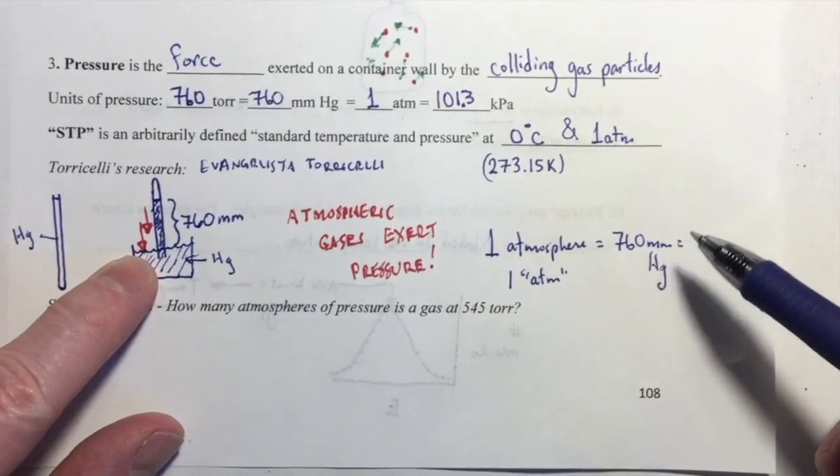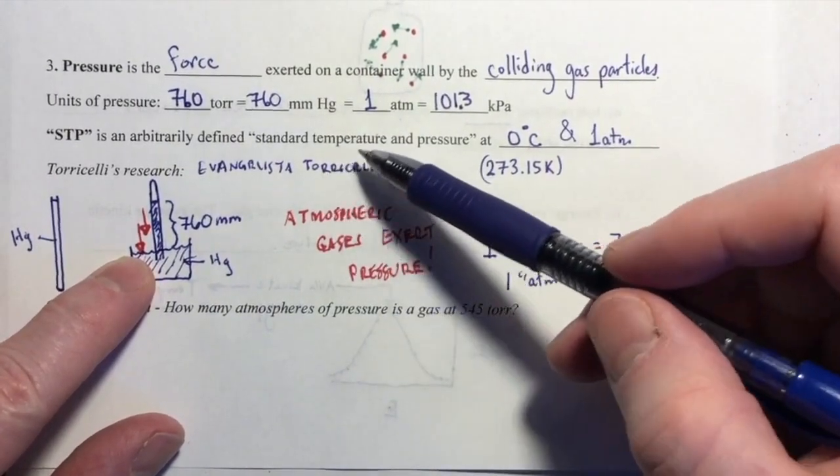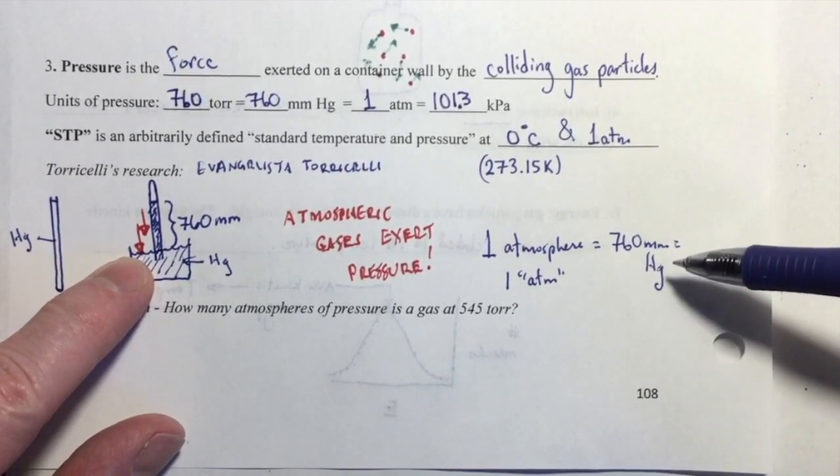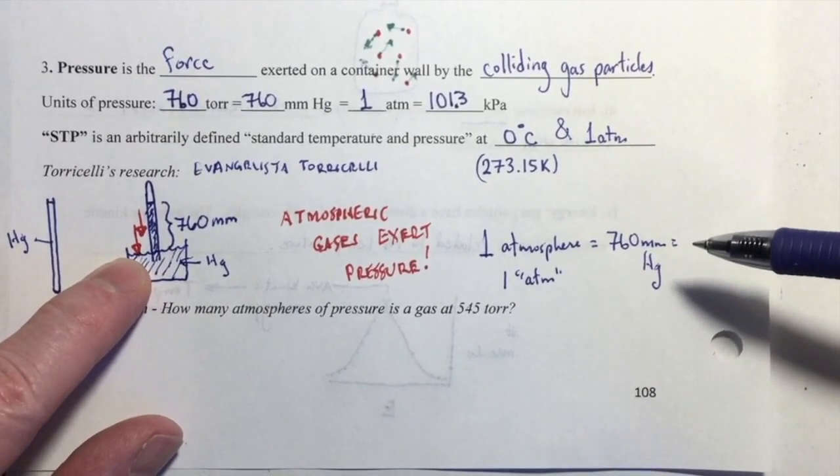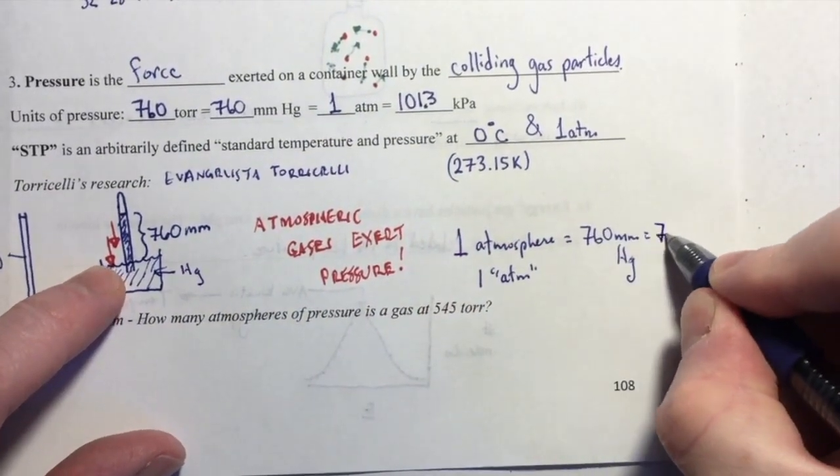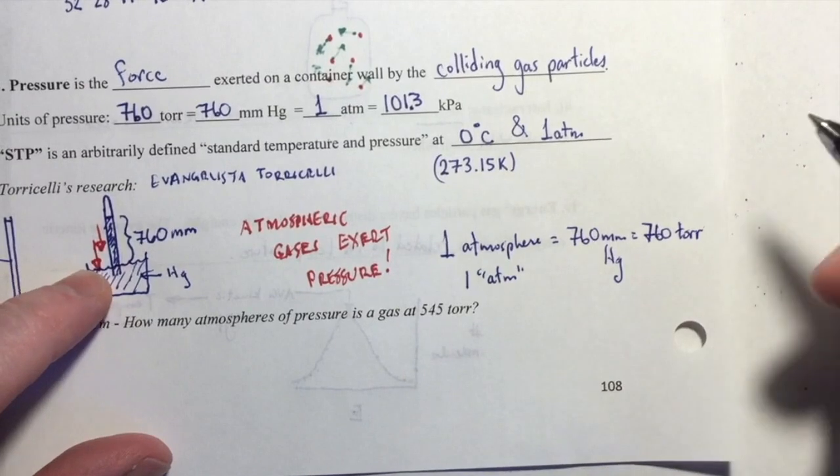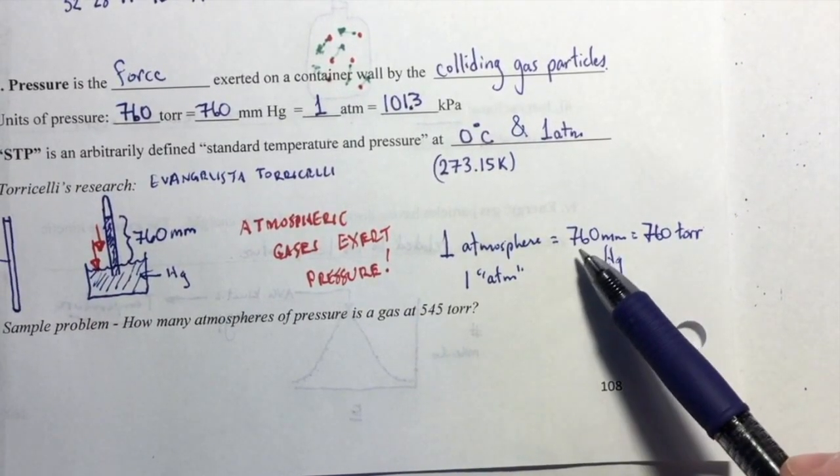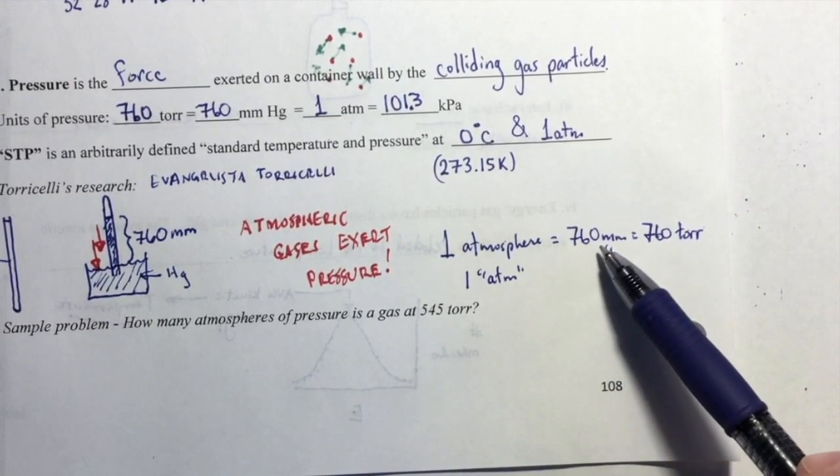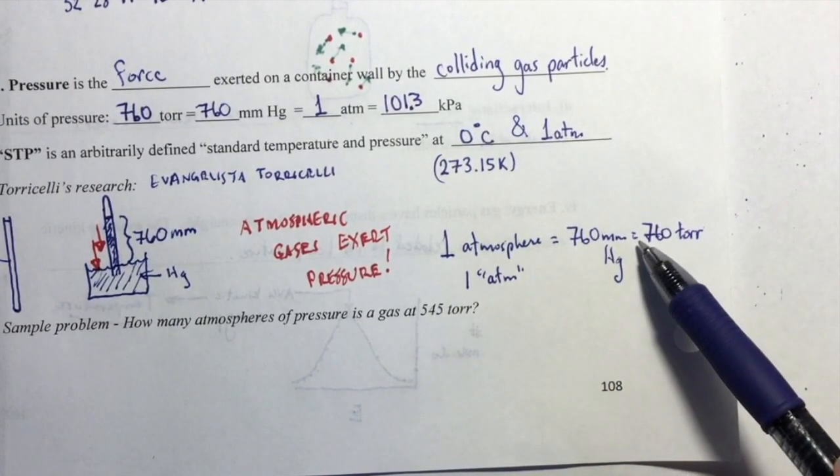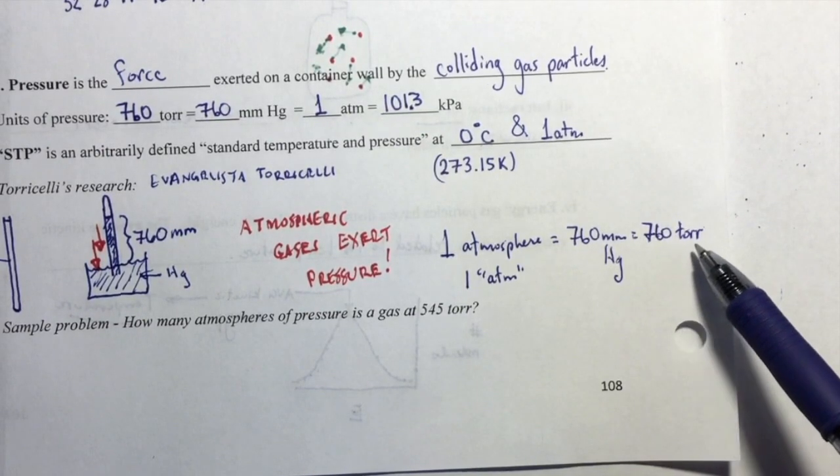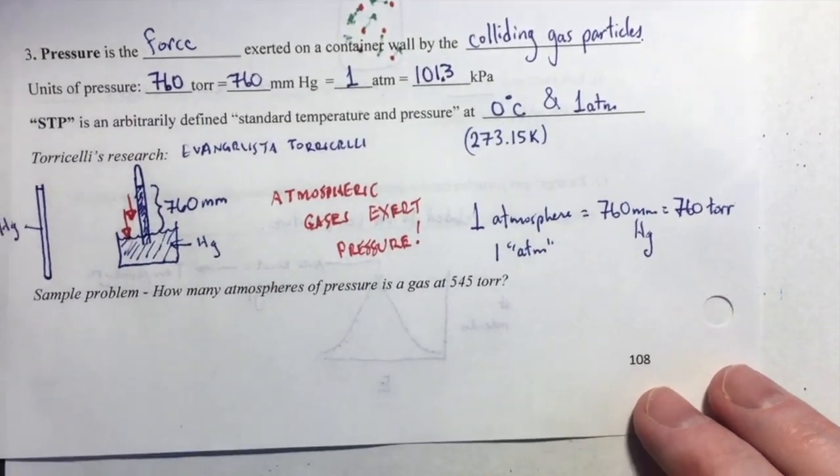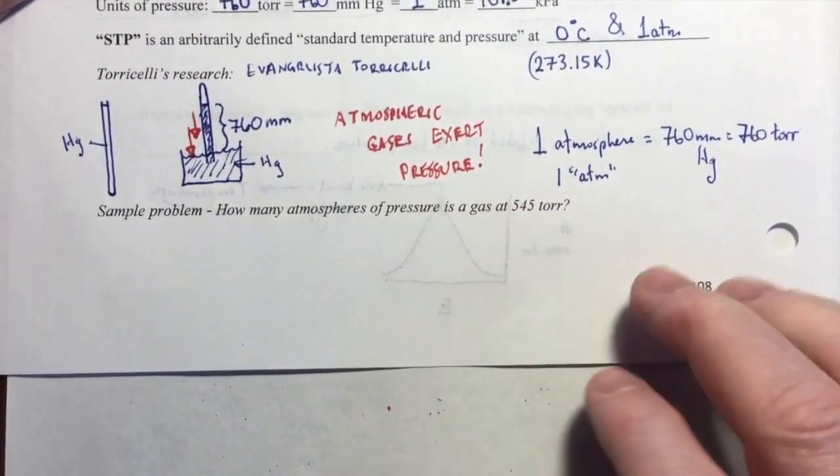Because of his work, Evangelista Torricelli was honored by having the millimeter of mercury unit of measurement of pressure named after him. So that's where we get these terms. One atmosphere, one ATM of pressure, equals 760 millimeters of mercury, which is the same as saying it equals 760 Torr. That gives you a little bit of insight into where these terms come from and how we get an atmospheric pressure.